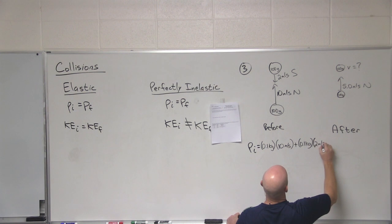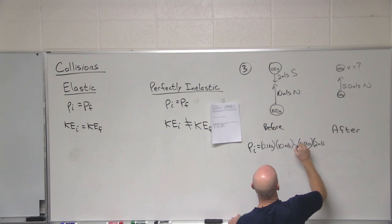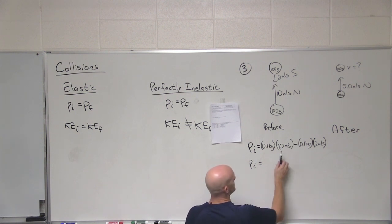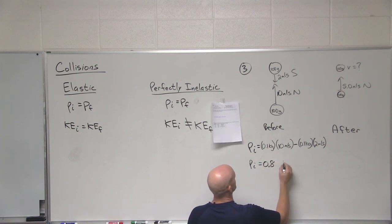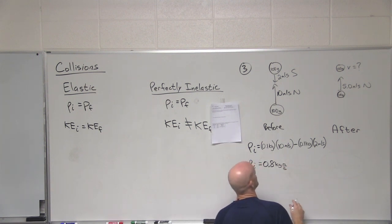So 2 meters per second, but that's south. In this case, I'm going to make north positive, south negative, which is why we'll subtract, as Kat just said. Awesome. And so what's the total momentum before the collisions of these two objects? Awesome. 0.8 kilogram meters per second.